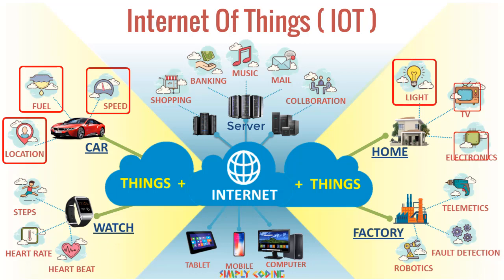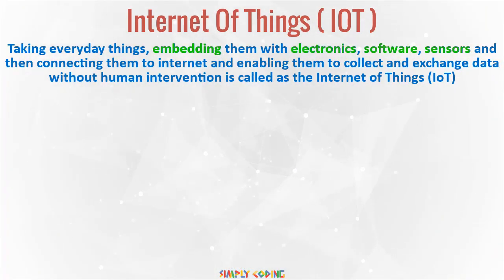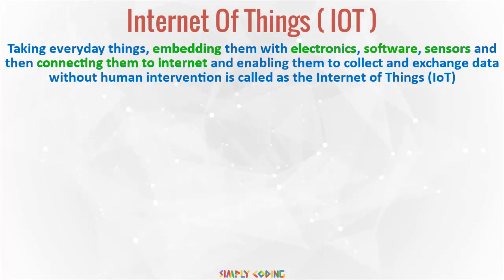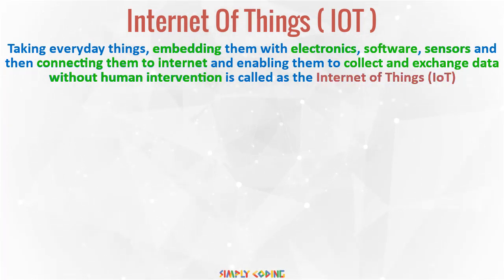I can control the light and all electrical appliances from my mobile. So, taking everyday things, embedding them with electronics, software, sensors, and then connecting them to the Internet and enabling them to collect and exchange data without human intervention is called the Internet of Things.